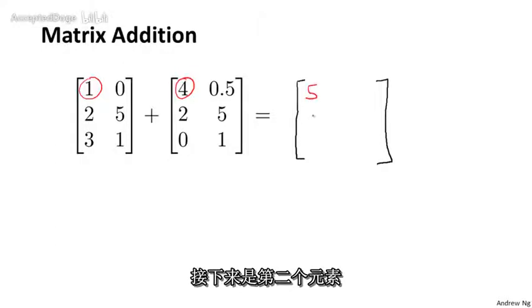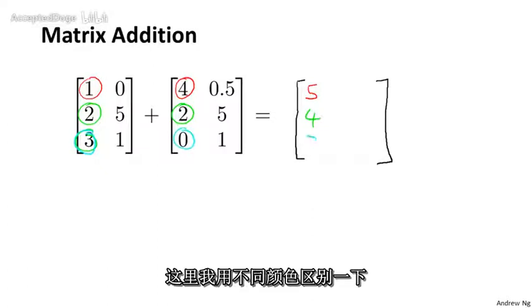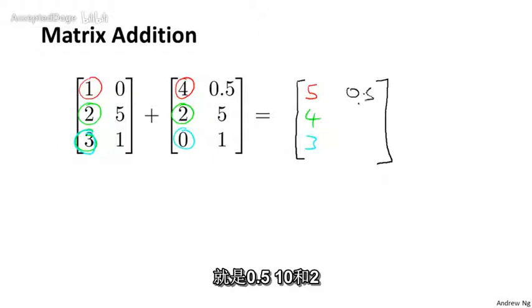The second element I get by taking 2 and 2 and adding them, so I get 4. 3 plus 0 is 3 and so on. And on the right is 0.5, 10, and 2.